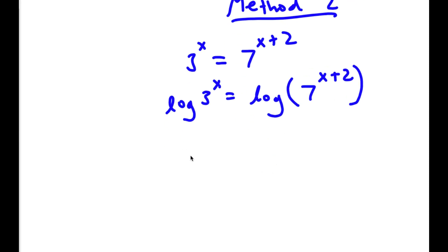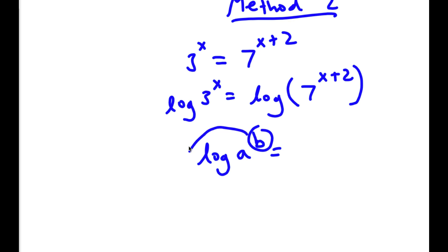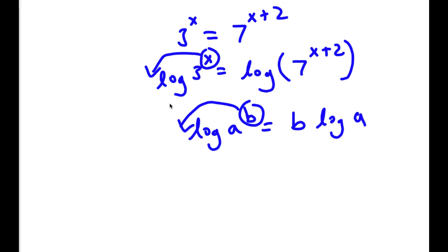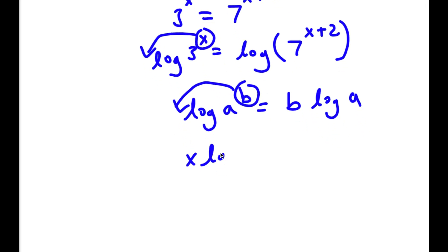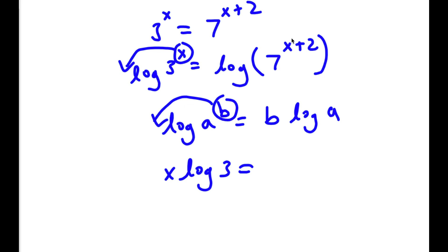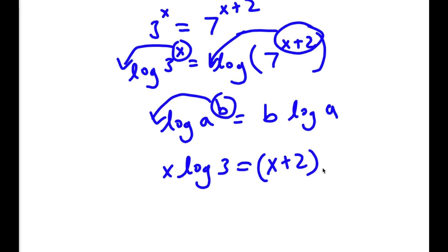Remember, an important property of logarithms is that if I have log a to the power of b, I can move this exponent b to the front of the logarithm — so this equals b times log a. So for log 3 to the power of x, I can move the exponent x to the front: x times log 3. Same goes with 7 to the power of x plus 2 — I move the exponent to the front: x plus 2 times log 7.